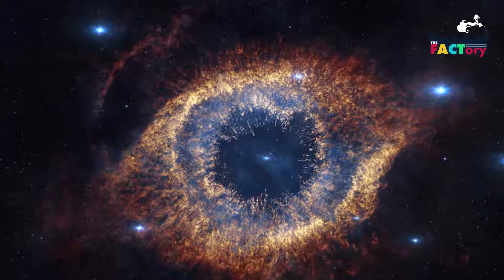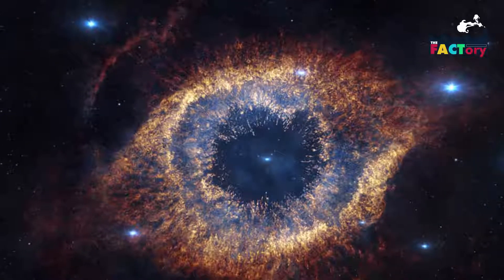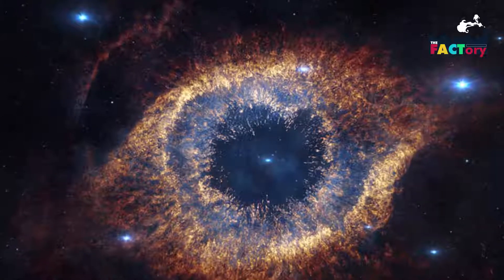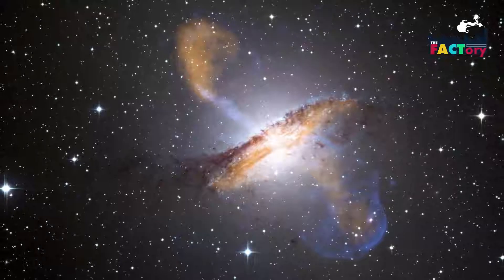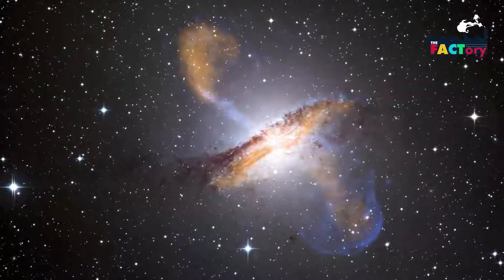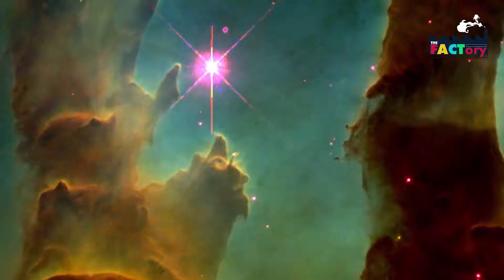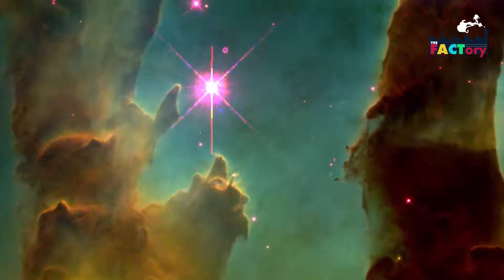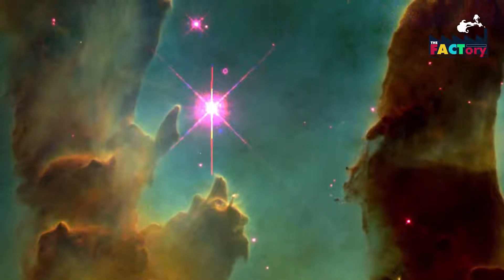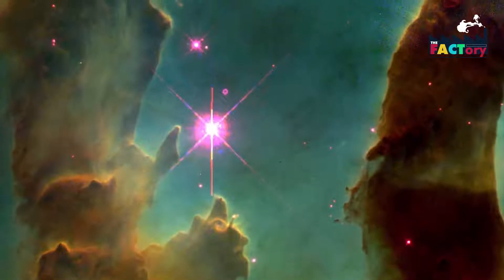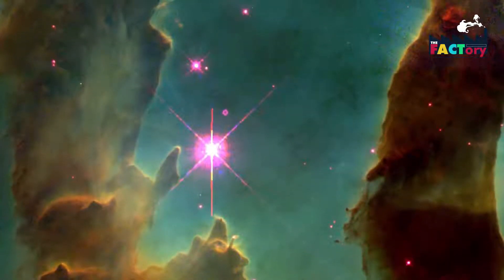The origin of the Infinity Stones dates back to a period when the universe did not exist. According to the comic books, there were six singularities which existed before the beginning of the universe. These singularities were forged into six different stones by four cosmic entities. These stones are called the Infinity Stones.